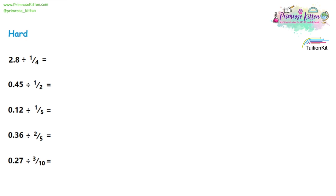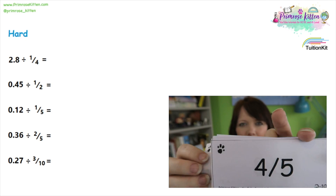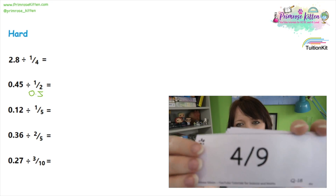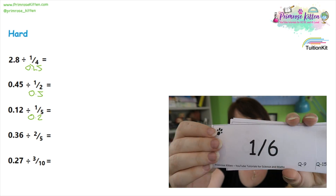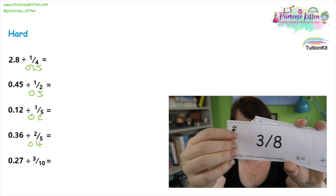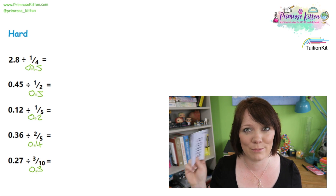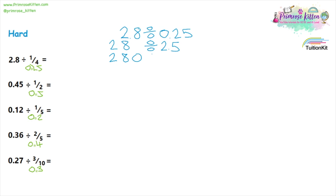Moving on to the hard questions, we have a mixture of decimal numbers and fractions. The best thing you can do is learn your fraction-to-decimal conversions. We convert: a half is 0.5, a quarter is 0.25, a fifth is 0.2, two fifths is 0.4, and three tenths is 0.3. Now that everything is written as a decimal, these are the same as the questions we've just done using the same method. For question one, we have 2.8 divided by 0.25. Shifting the decimal place once gives 28 divided by 2.5 — that doesn't work with our method, so we shift again, giving us 280 divided by 25.